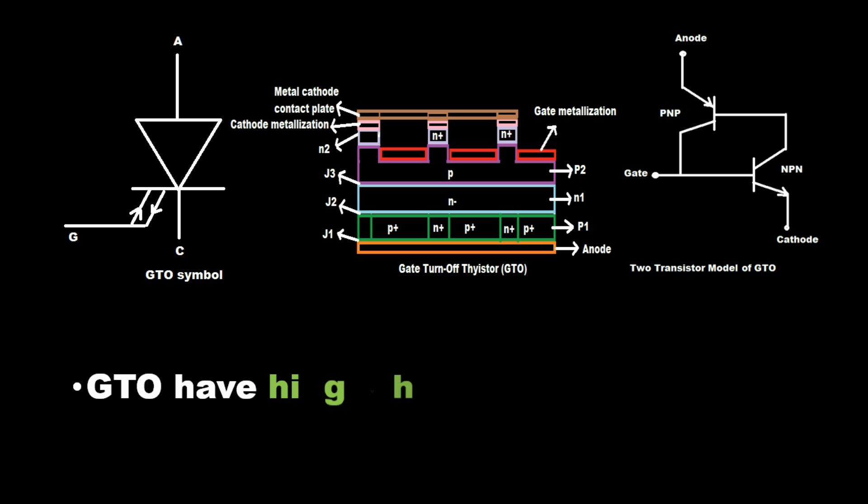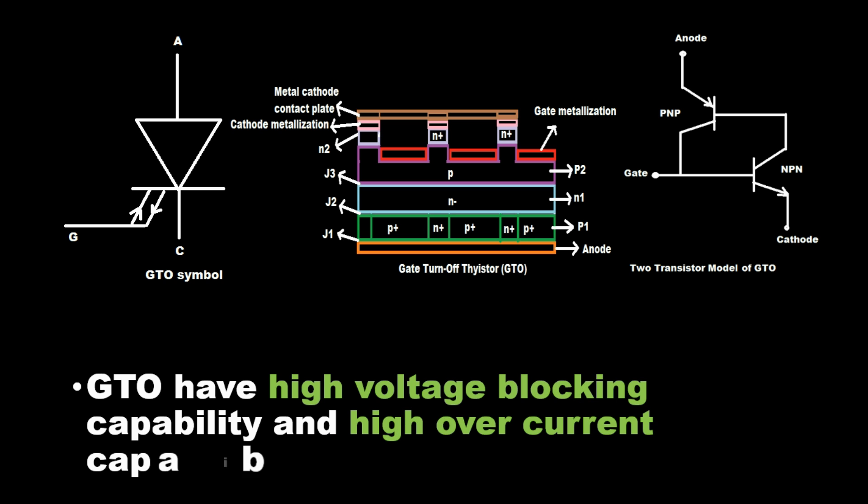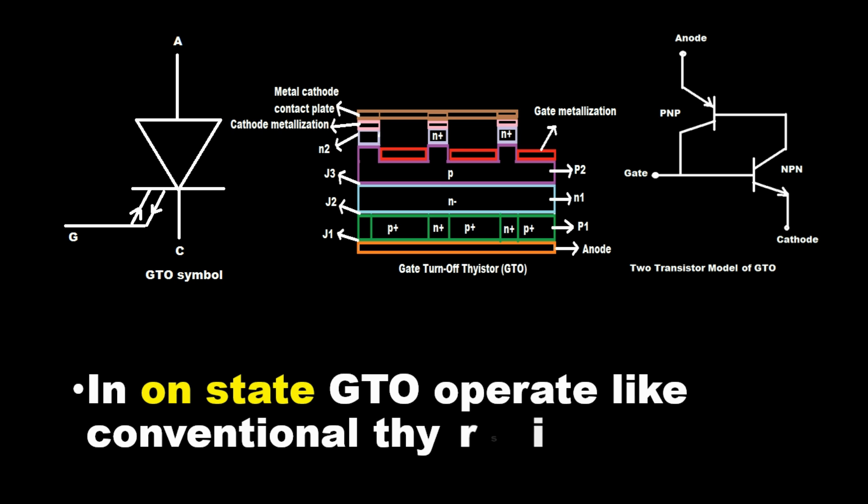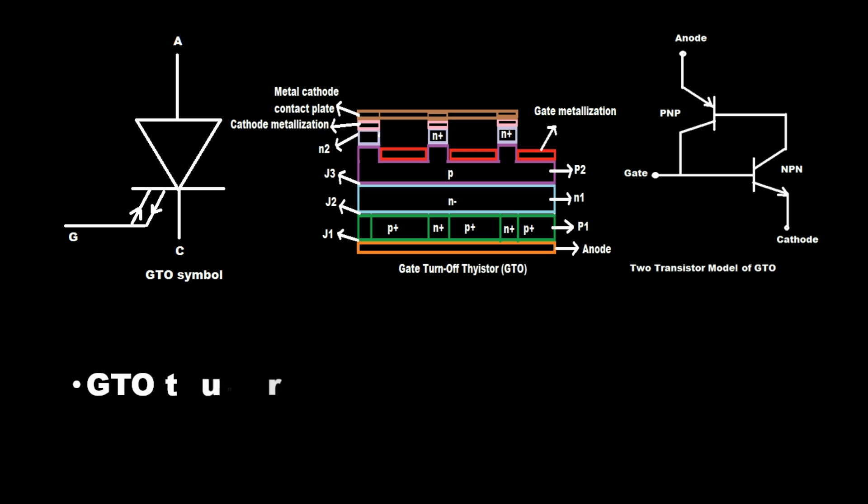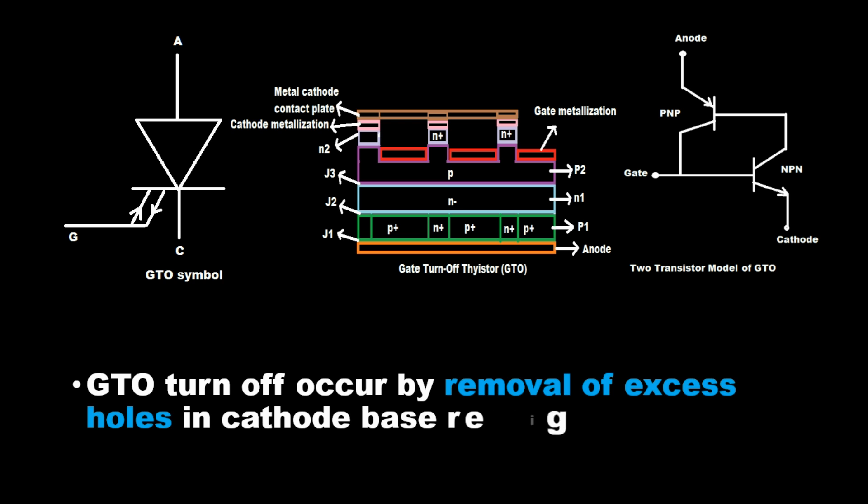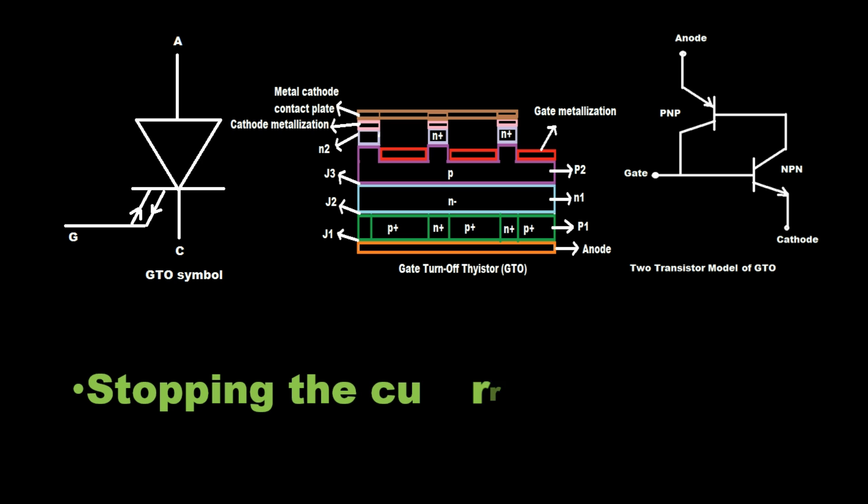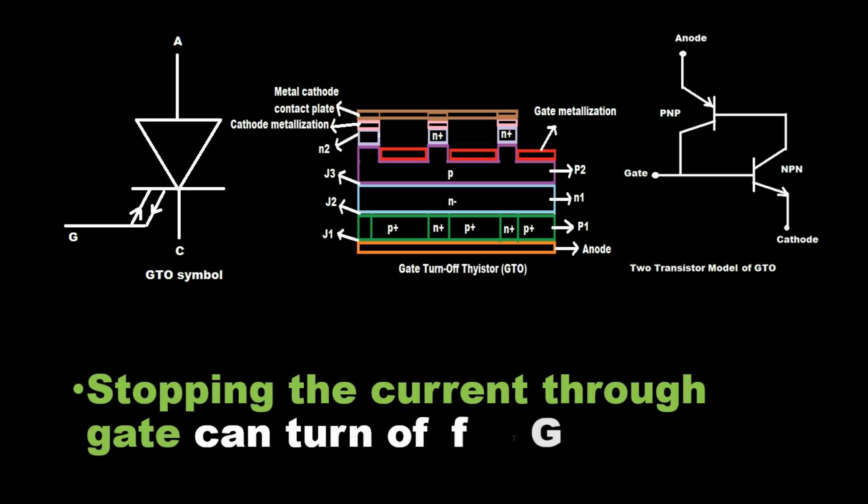GTO have high voltage blocking capability and high over current capability. In on-state GTO operate like conventional thyristor. GTO turn off occur by removal of excess holes in cathode base region by reversing the current through gate terminal. Stopping the current through gate can turn off GTO.